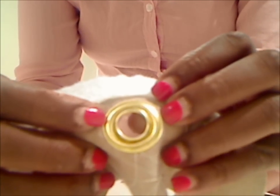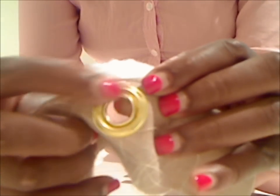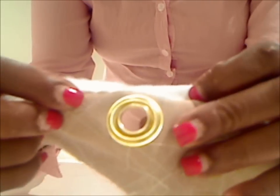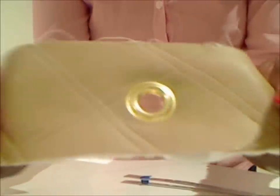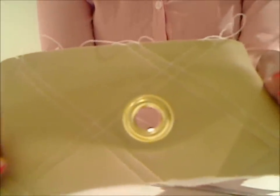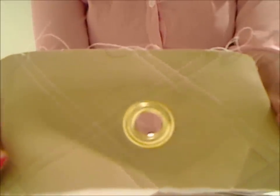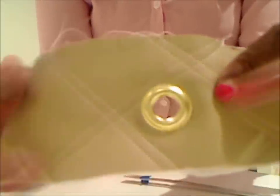You should see that part on the wrong side of your fabric. If you turn it round, you have the pretty side of your grommet attached and this is firmly in place.